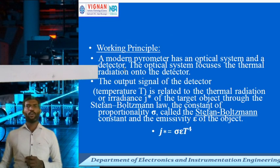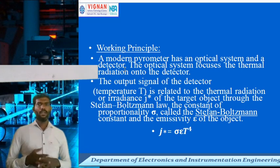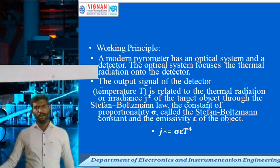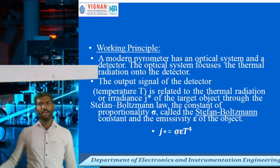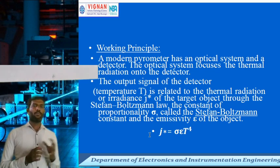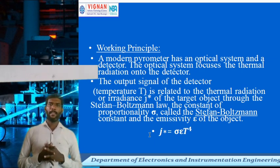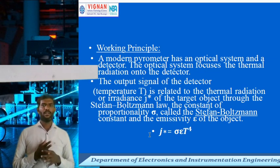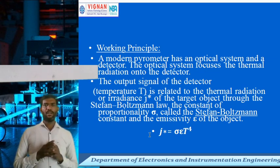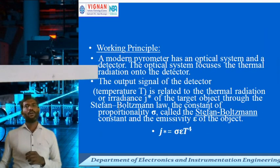The optical pyrometer works on the basic principle: J* = σ · ε · T⁴, where sigma is the proportionality constant, epsilon is the emissivity, and T is the temperature — with the Stefan-Boltzmann constant involved. Using this principle, the optical pyrometer infers the object's temperature from a distance. This is the special advantage: without contact with the material, we are able to measure the temperature.